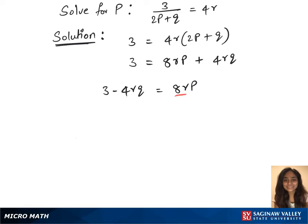Now we'll be dividing 8r on both sides, which gives us 3 minus 4rq over 8r equals to p. We have now solved for p. That's our solution.